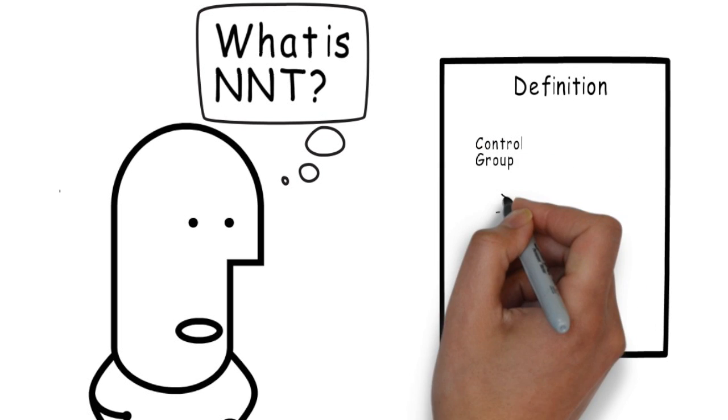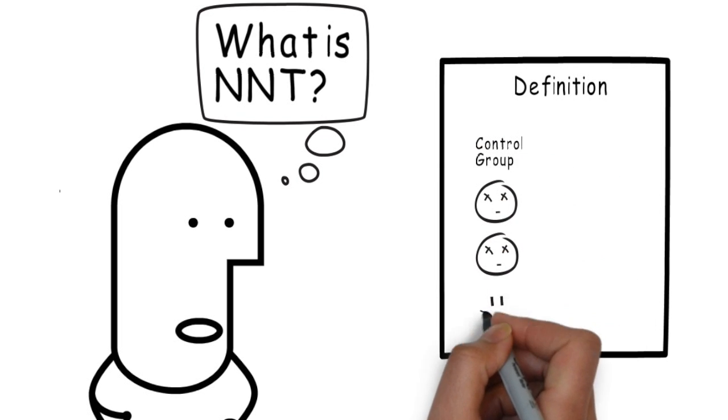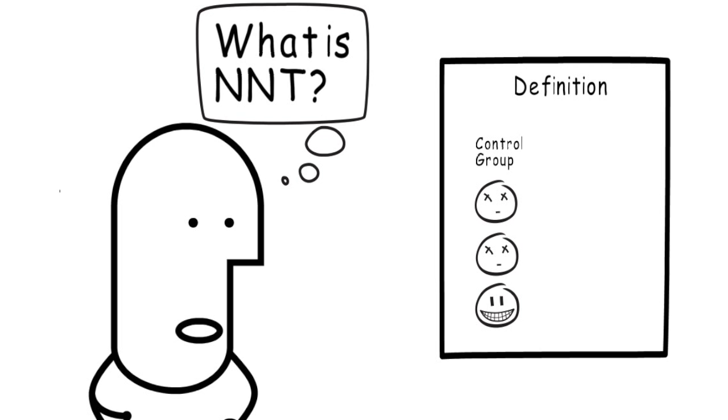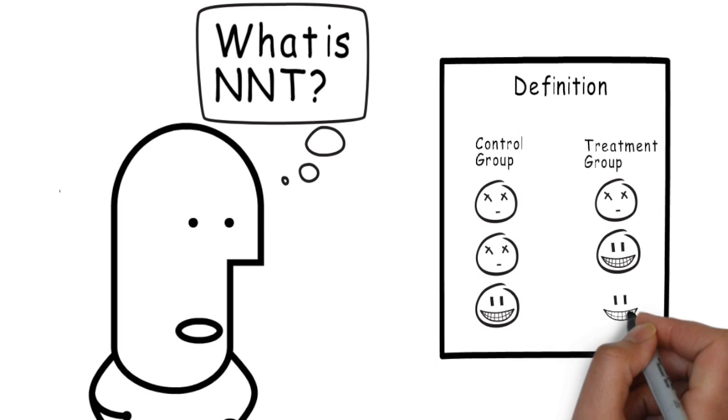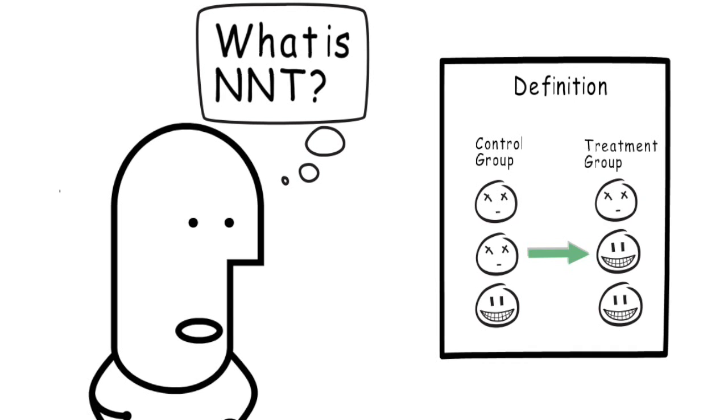Let's look at a really simple example. In this example, the control group has three patients. One patient has a good outcome and two have a bad outcome. In the treatment group, also containing three patients, two patients have a good outcome and one patient has a bad outcome. What you'll notice in this study is that one third of patients in both the control and treatment groups have a bad outcome regardless, and one third of patients in both groups have a good outcome regardless. There is this other third of patients though who in the control group have a bad outcome and in the treatment group have a good outcome. These are the patients who are said to benefit.